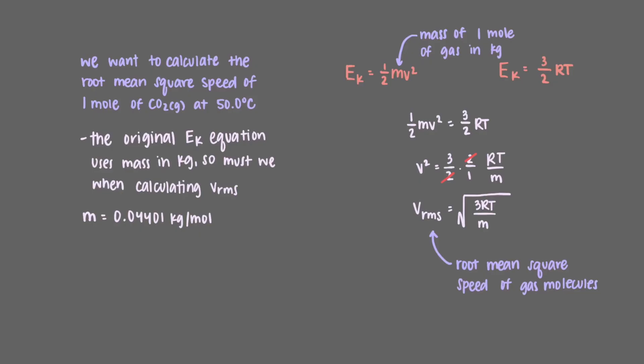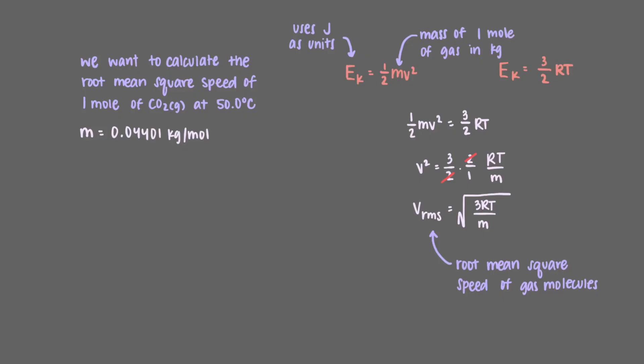We have a few different values of r we can use. Which value of r should we use here? Kinetic energy uses joules as units. If we look back to when we set both definitions of kinetic energy equal to each other, we see that for both sides of the equation to use the same units, r must be expressed in terms of joules.